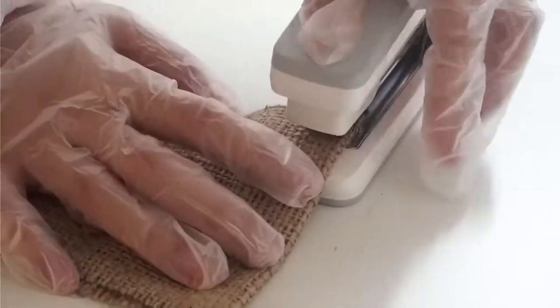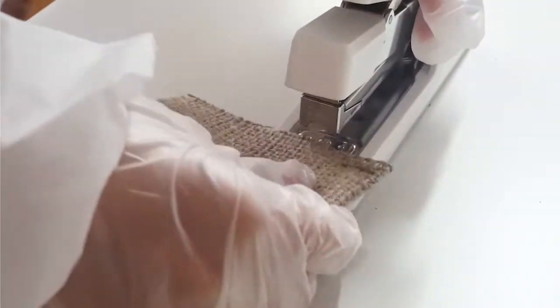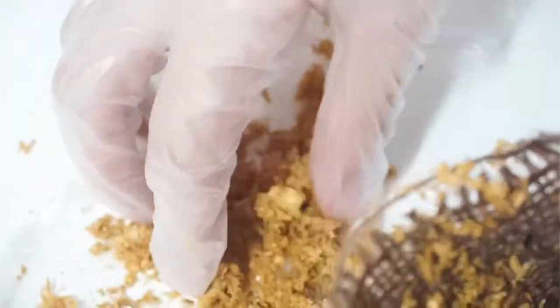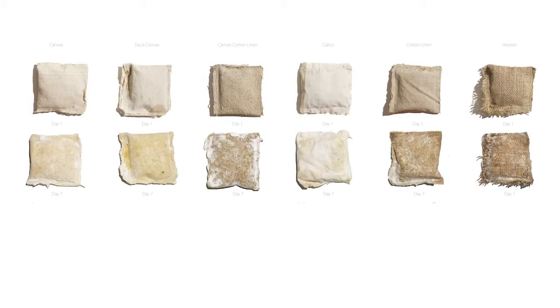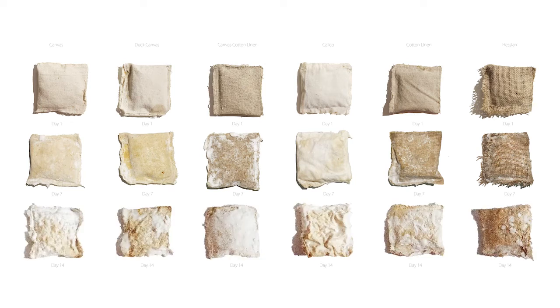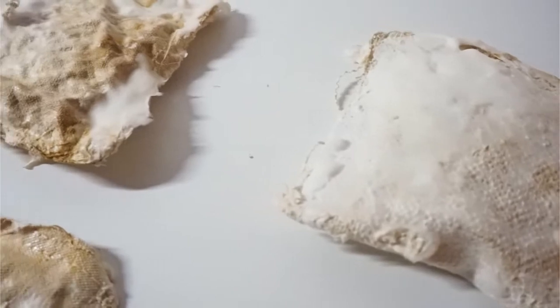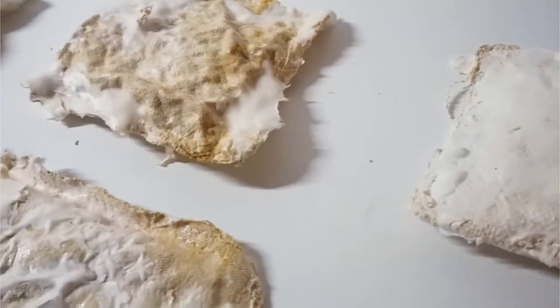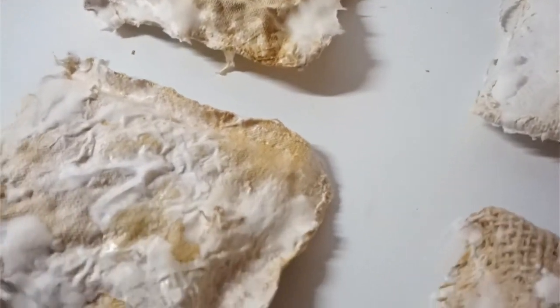Among them, hessian textile stood out as our main material due to its low cost and high efficacy. During its growth, mycelium feeds itself with cellulose and covers the textile. As we were recording the growth of mycelium, we witnessed the growth of the architecture itself.